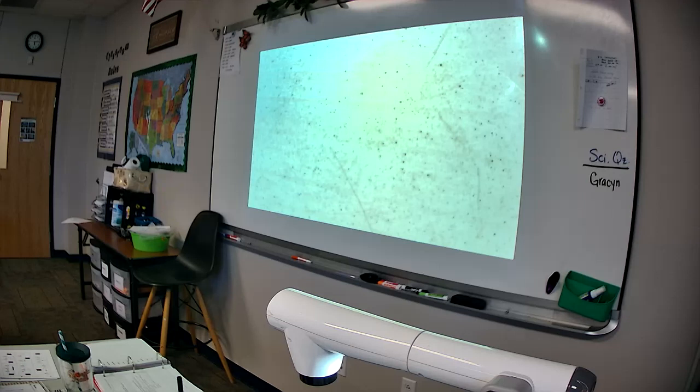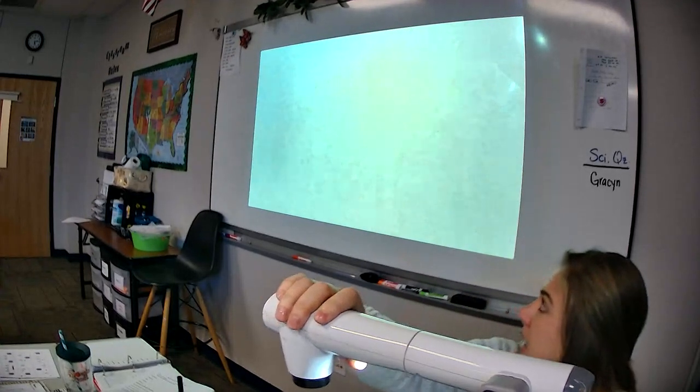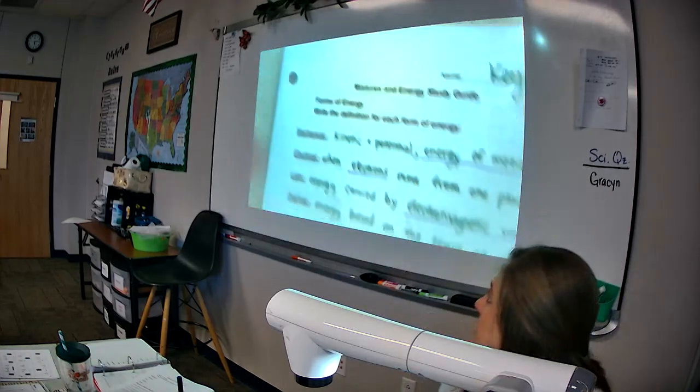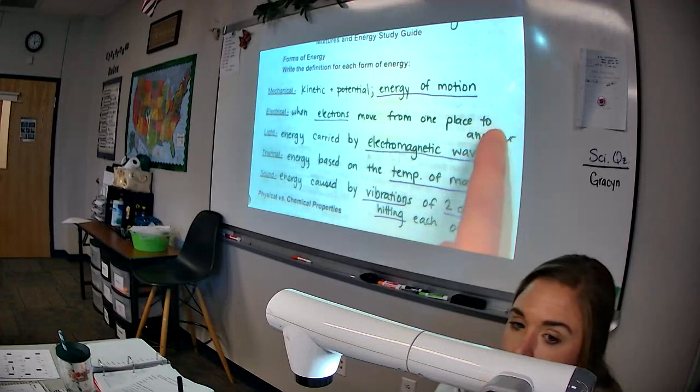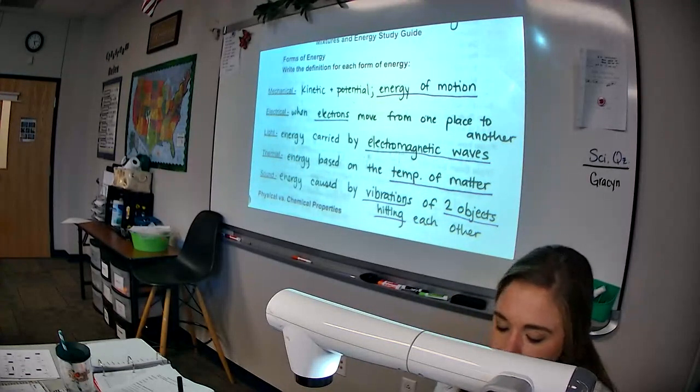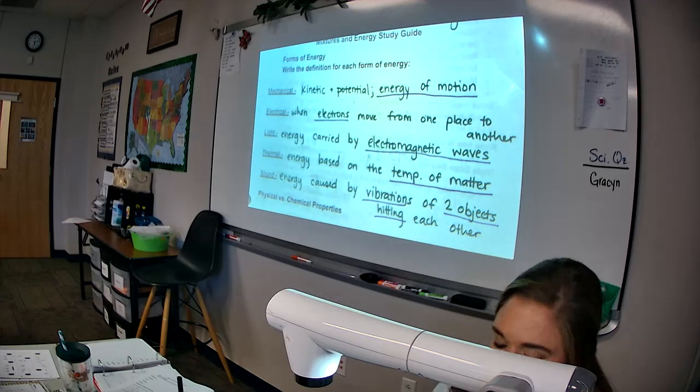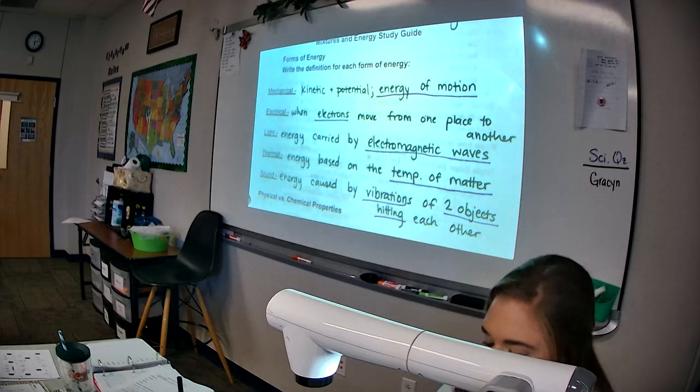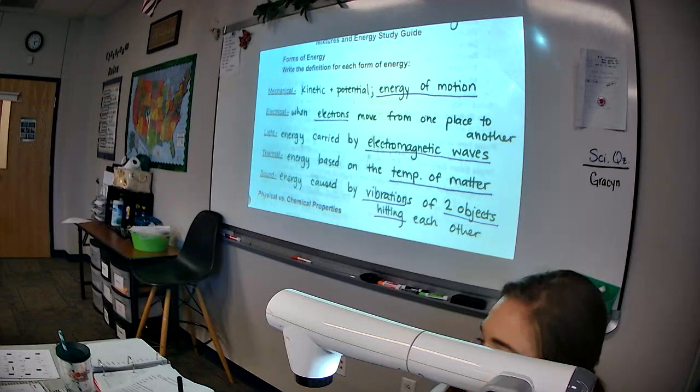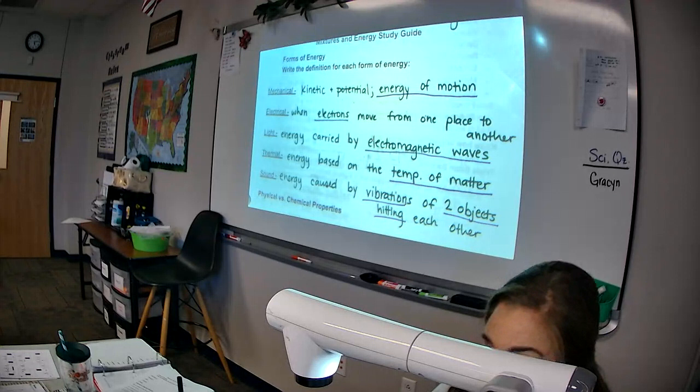All right. For the first part, it says write the definition for each form of energy. I'm going to go ahead and give those to you since we haven't discussed all of them yet. But what I do want you to see is I have particular parts of them underlined. So you do need to write the whole definition, but the underlined parts are the key words. So mechanical energy. Mechanical energy is the combination of kinetic and potential. Kinetic plus potential gives you all of mechanical. But the better way to explain it is it is the energy of motion.